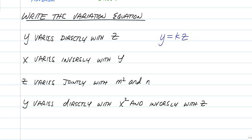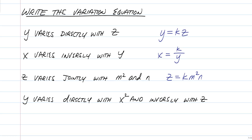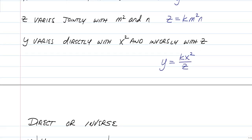X varies inversely with Y, so X equals, inversely is divided by, so K over Y. Z varies jointly with M squared and N, so Z varies. And then we have K, M squared, N. And finally the last one, this is one of those multi-step ones where you have Y varies directly with X squared and inversely with Z. So we have Y equals, directly with X squared, so that's KX squared, and inversely with Z. You don't write K twice. So you just have K times X squared and then divided by Z. So those are how you write variation equations, which will be important when we get to writing them when solving for a constant.